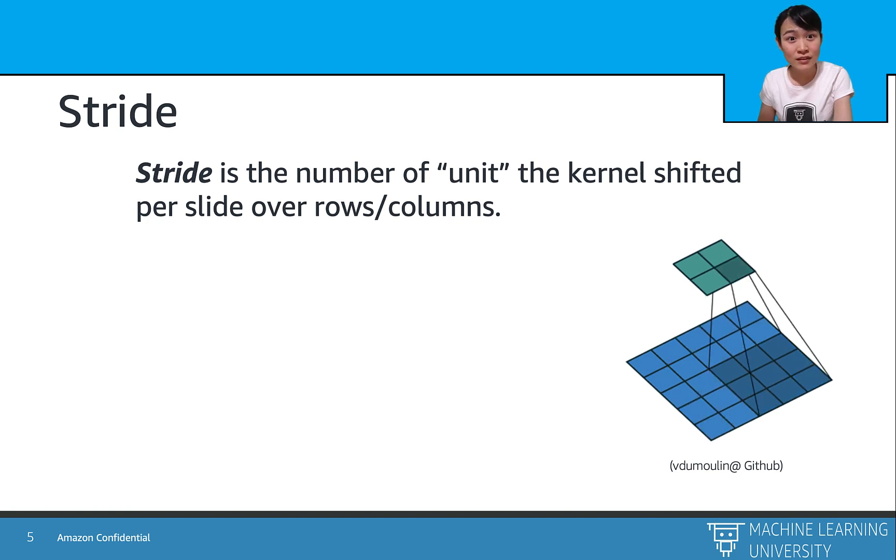What is stride? Stride is the number of rows or the number of columns traversed per slide. On our right-hand side is a great illustration that shows a stride of 2 both vertically and horizontally.